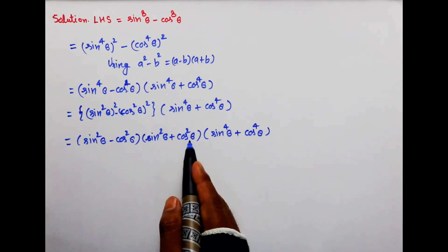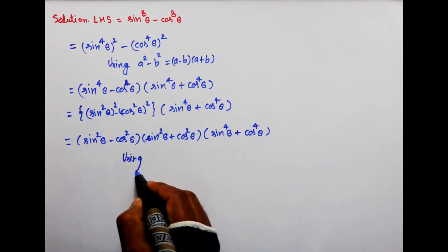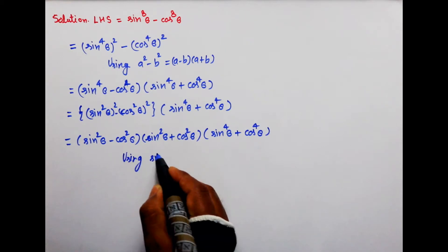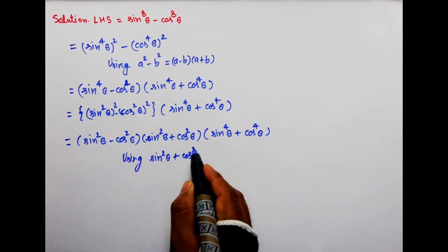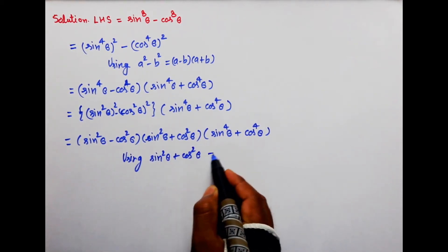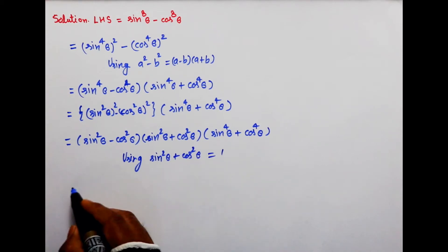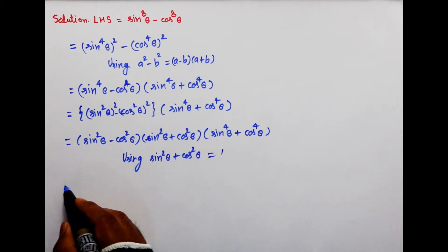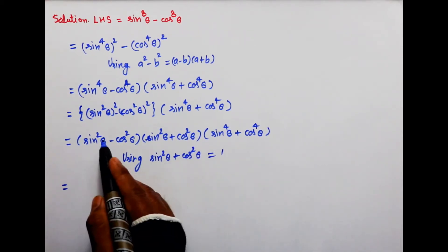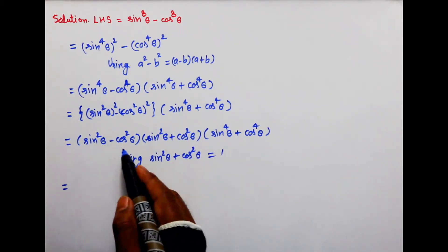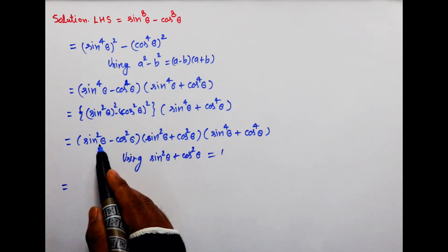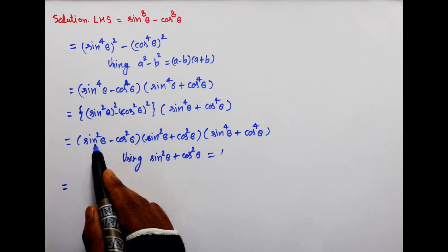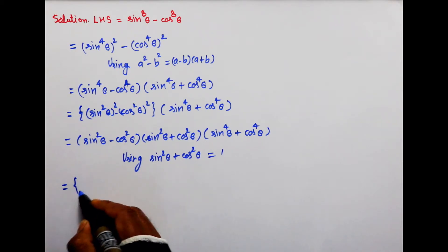Ab bachyo, sin square theta plus cos square theta waala bracket 1 ban jaayega, using sin square theta plus cos square theta = 1. Aur bachyo, RHS ke first factor mein sin theta ki term nahi hai, sirf cos ki hai.